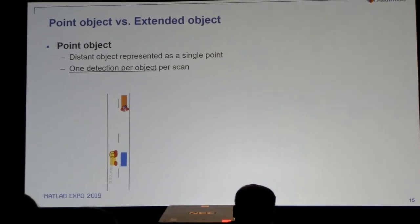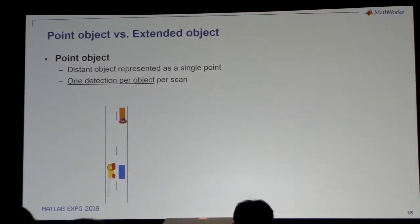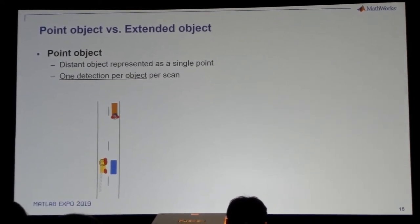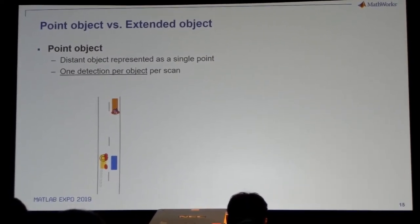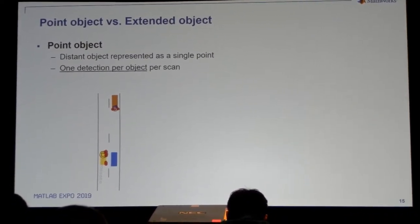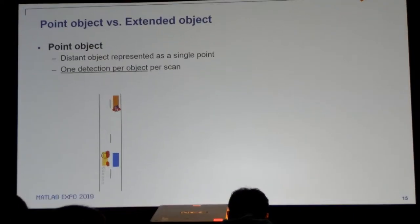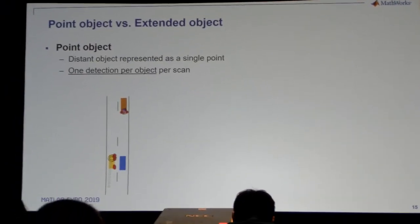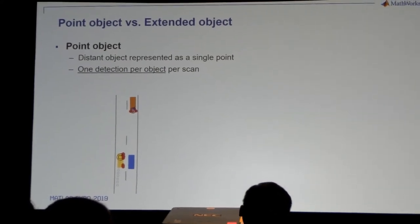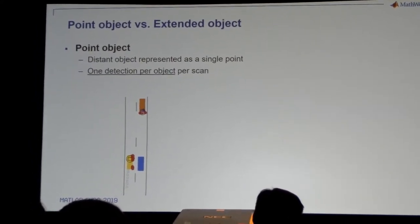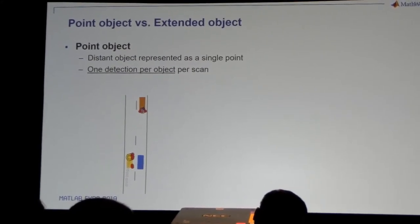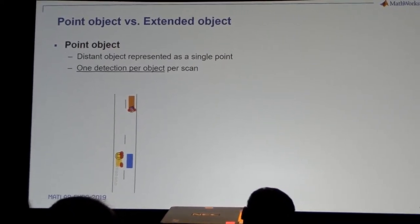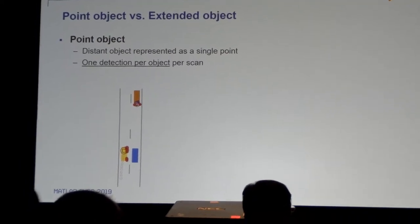Those three trackers I showed you were point object trackers. The basic assumption for point object trackers is that we get one detection per object per scan. In the case of radar, even if it's a big object close to the sensor, we do some work in the form of clustering to reduce the collection of points into a single point object, feed that into the tracker, and track it. You can also create a shape and put that shape into the point object tracker and track the shape.